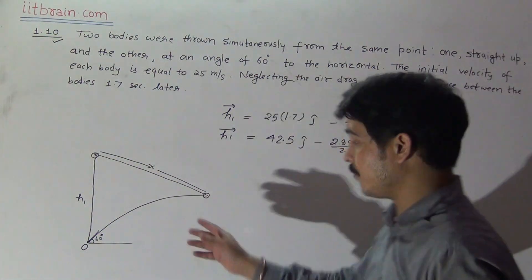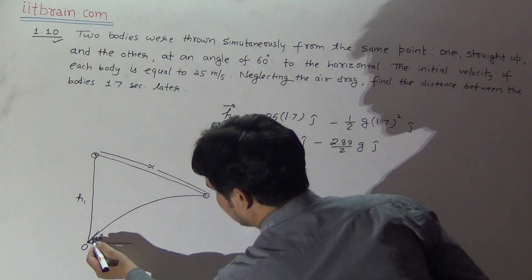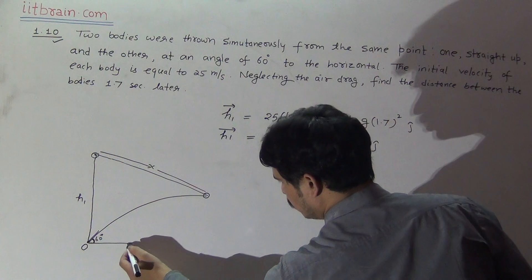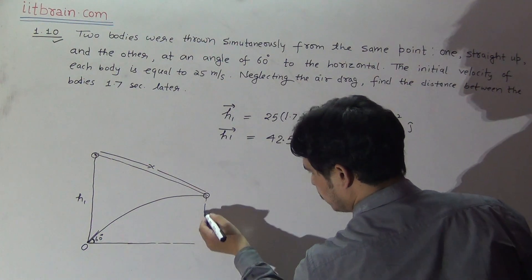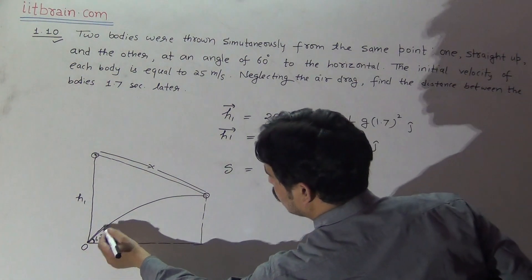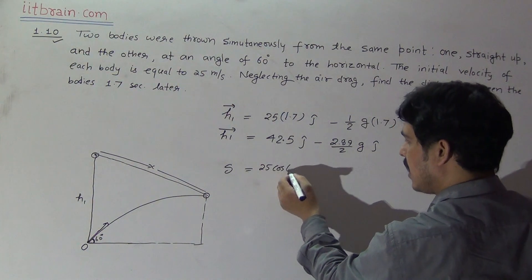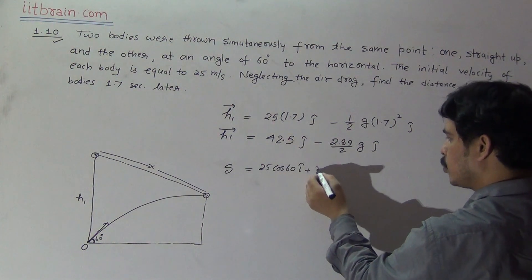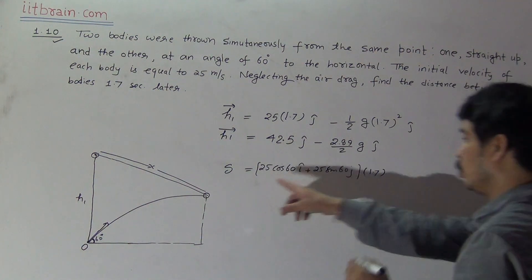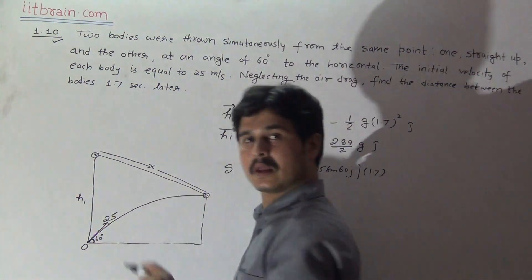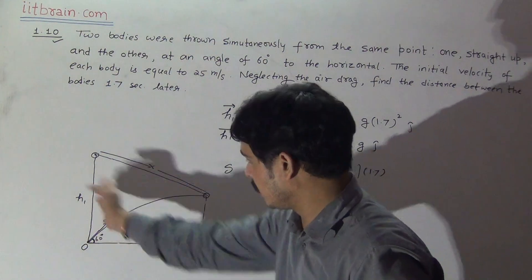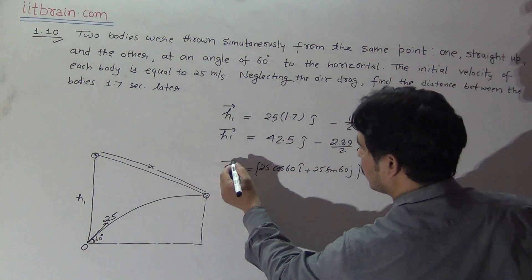For the second particle moving at 60 degrees to the horizontal, the position is given by s = u·t − (1/2)g·t²·j. The velocity u of the second particle is 25 m/s at 60 degrees to the x-axis, so its components are 25·cos60° in the i direction and 25·sin60° in the j direction. So u in vectorial form is 25·cos60·i + 25·sin60·j.